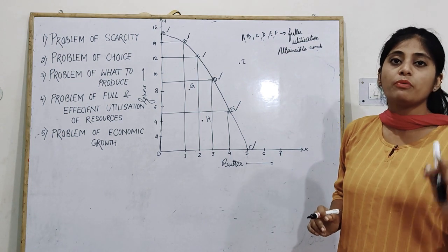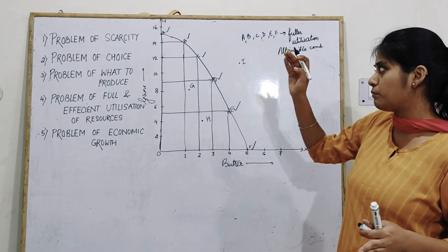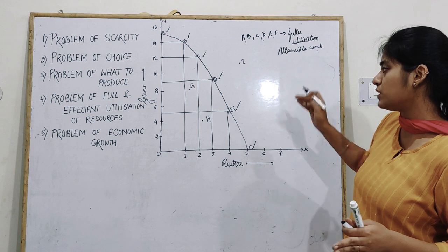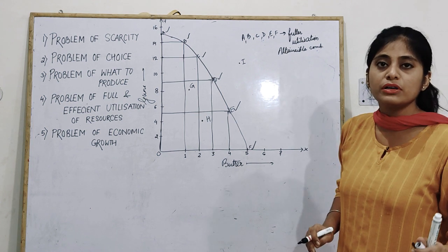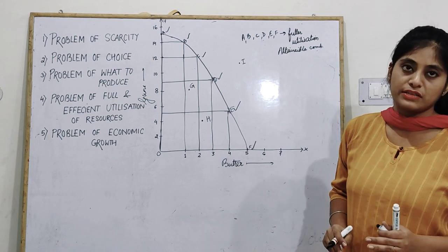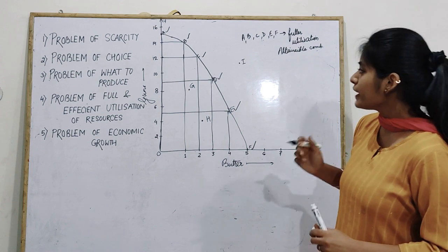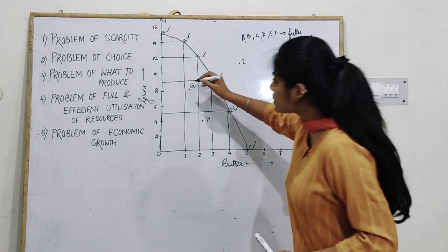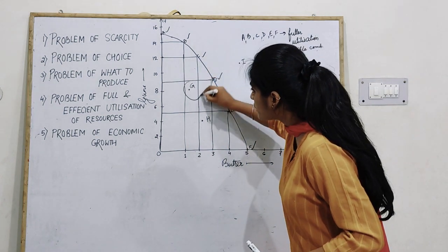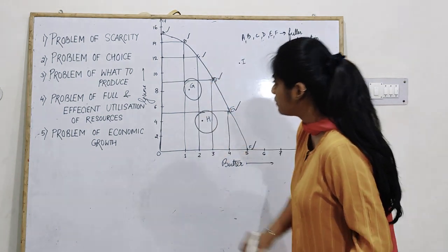All the points on the PPC curve — A, B, C, D, E, F — are attainable combinations and represent fuller utilization of resources. Next, you can see some points inside the PPC curve: G and H.